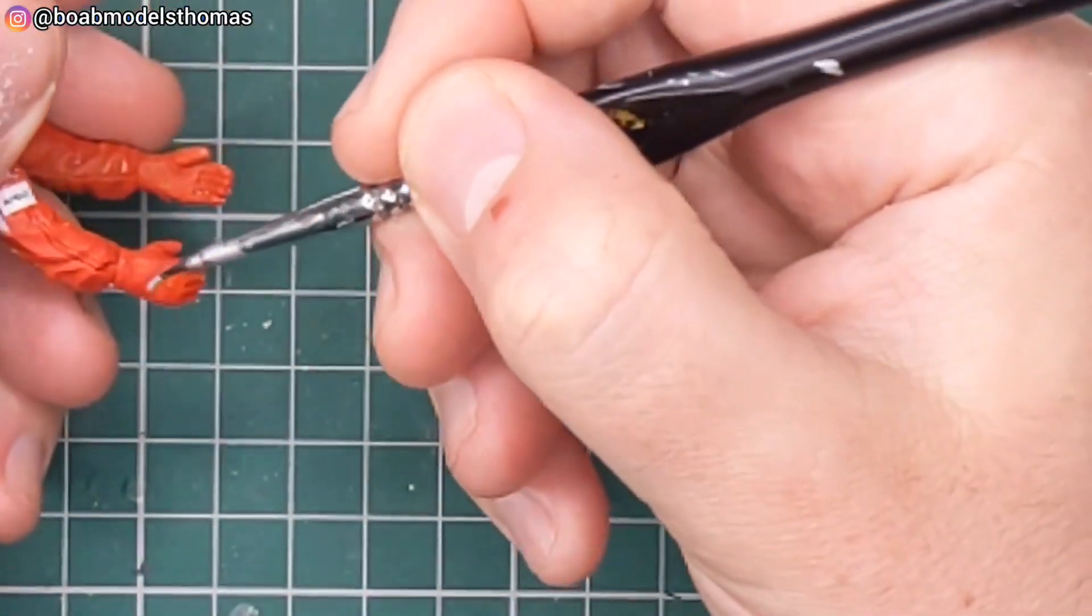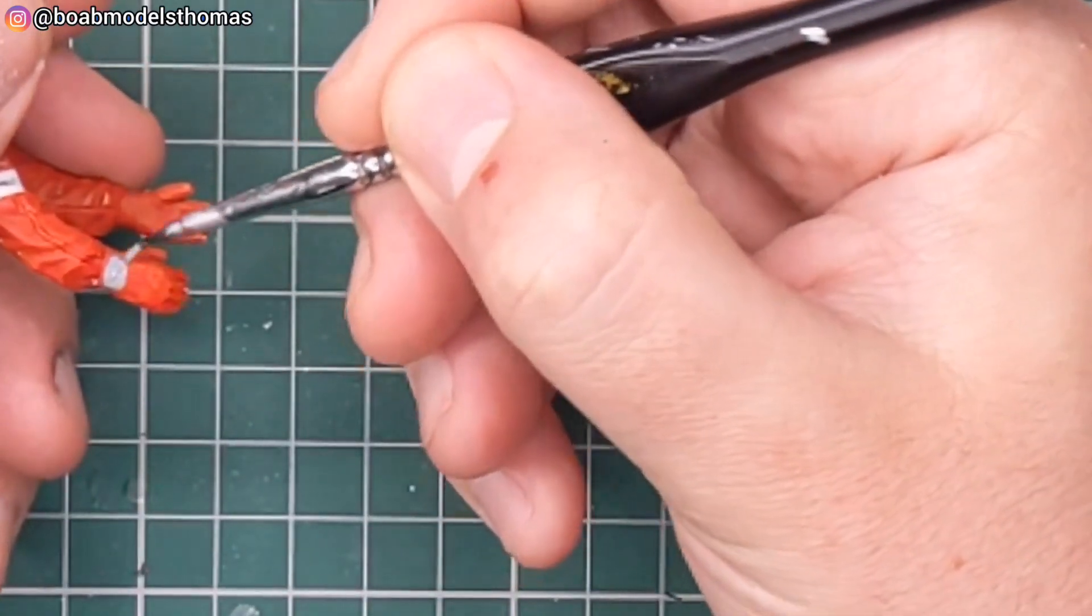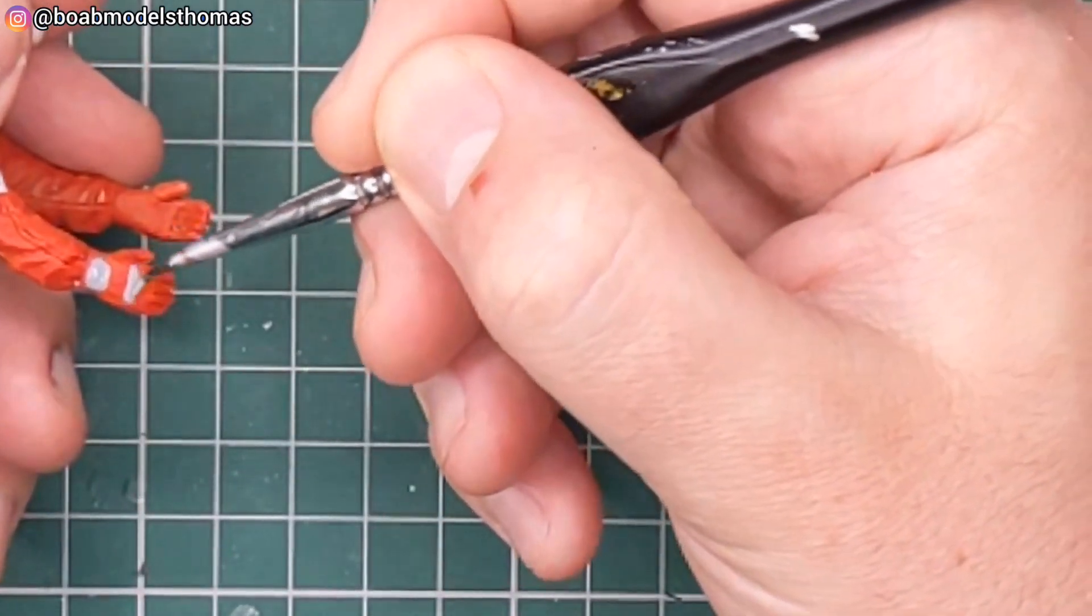I then did these grey sections on the back of the gloves like so. This is using stone grey from Revell.